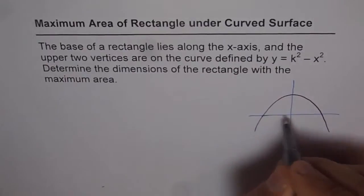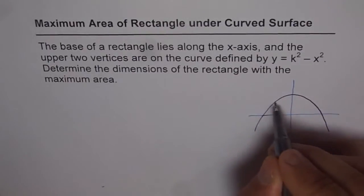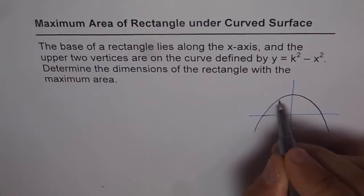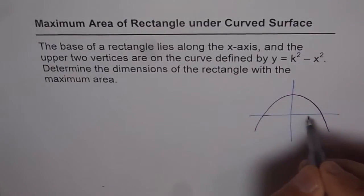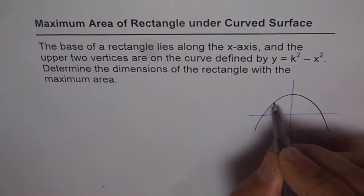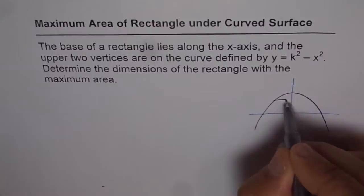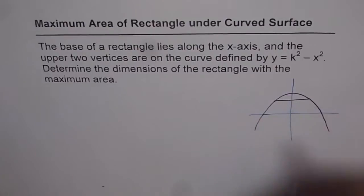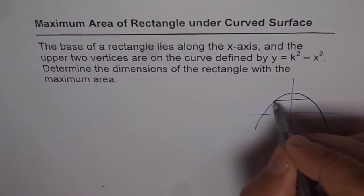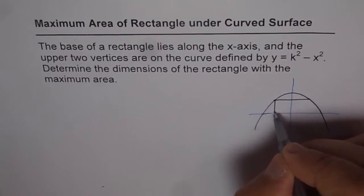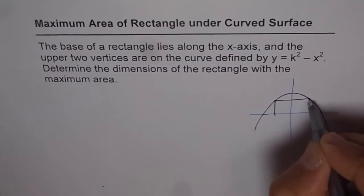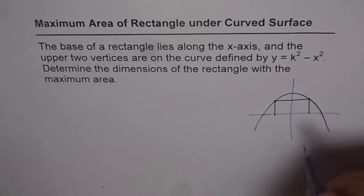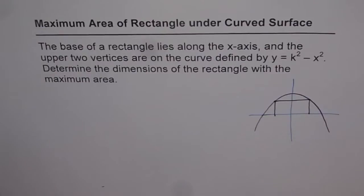The upper side of the rectangle has to be parallel to the x-axis. So we draw a line parallel to the x-axis, and that forms a rectangle when we draw perpendiculars down from the curve to the x-axis.